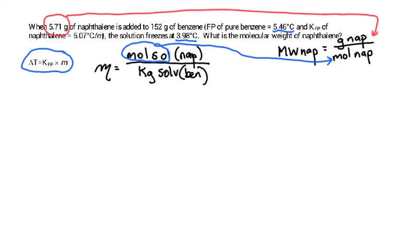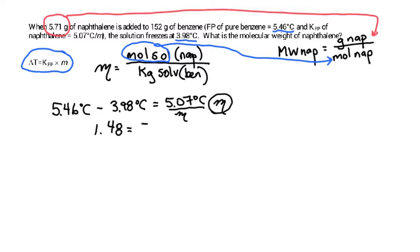We're going to take the freezing point of pure benzene, 5.46, minus the freezing point of the solution, which is 3.98 degrees Celsius. That's going to equal our molal freezing point constant for benzene, which is 5.07 degrees Celsius per molal. We don't know what the molality is. That's our unknown that we're going to be solving for. So 5.46 minus 3.98 is 1.48 equals 5.07 times that molality that we're trying to solve for.